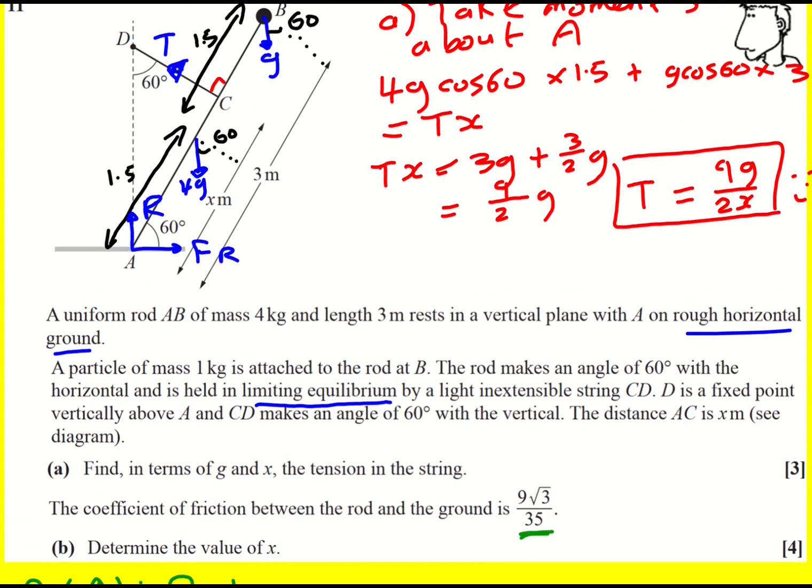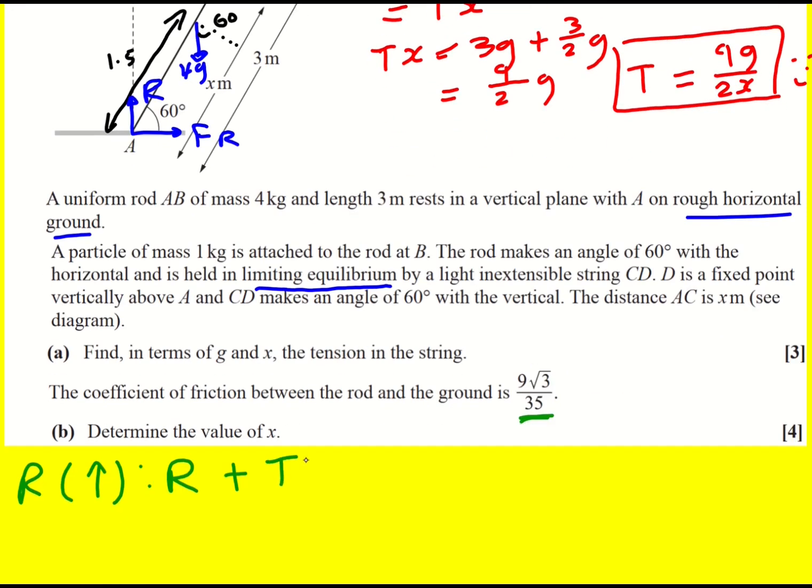So I've got the R plus a component from T. It's going to be T cos 60, because I'm turning it into the angle. No, that's not my right angle triangle. That is my right angle triangle coming along, so T is the hypotenuse. So T cos 60, and that is going to equal 4G plus G.